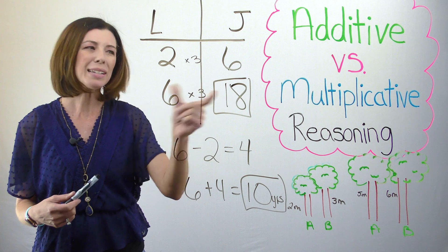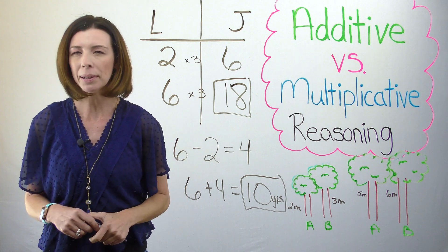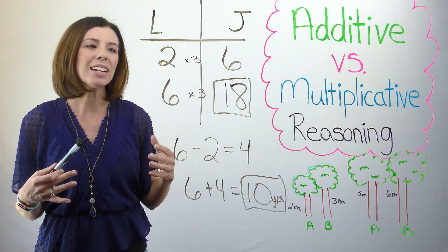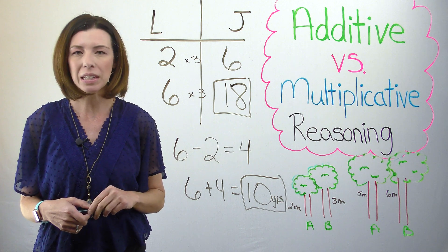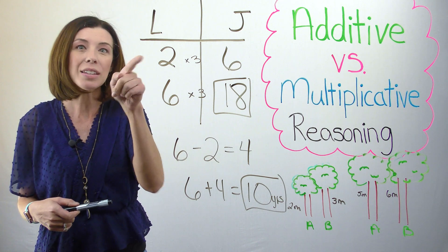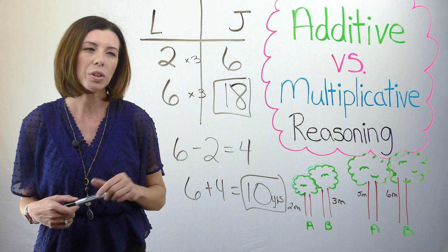In this case, it doesn't make any sense to think about it multiplicatively because James isn't really 3 times as old as Lisa. Yes, he is in this moment, but really he's 4 years older.